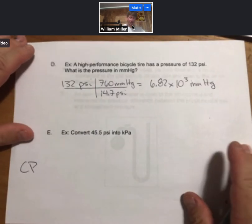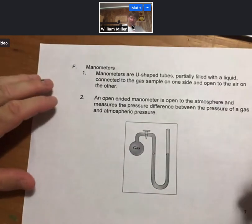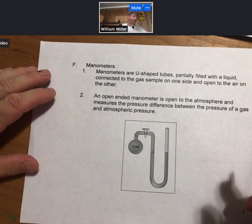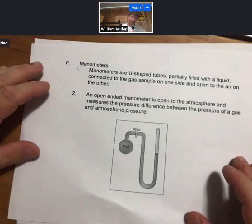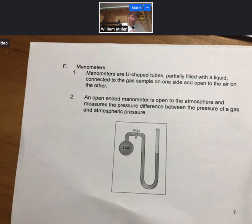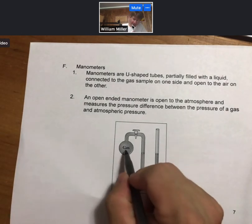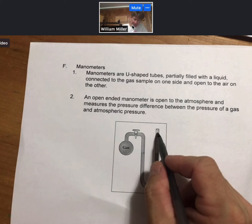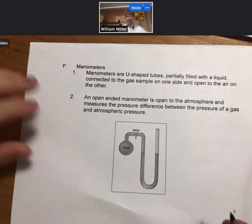Letter E is a companion problem. And I'd like to say one other thing about how to measure pressures, and that's not necessarily for the atmosphere. That's for measuring the pressure of gases. Manometers are U-shaped tubes partially filled with a liquid connected to the gas sample on one side and open to the air on the other. An open-ended manometer is open to the atmosphere and measures the pressure difference between the pressure of a gas and atmospheric pressure.